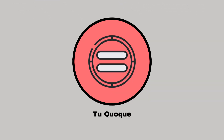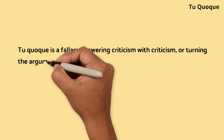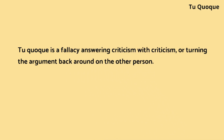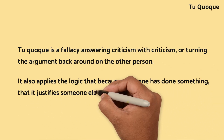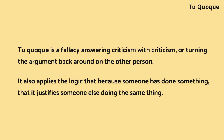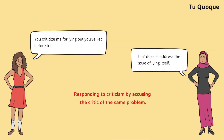Tu quoque is a fallacy answering criticism with criticism, or turning the argument back around on the other person. It also applies the logic that because someone has done something, it justifies someone else doing the same thing. Zoe responds to criticism by accusing the critic of the same fault. Emily highlights that this does not address the original issue, reminding us to focus on the argument rather than the arguer.